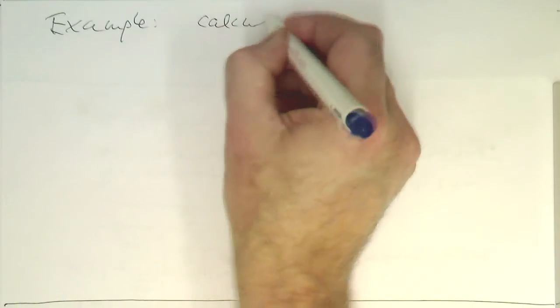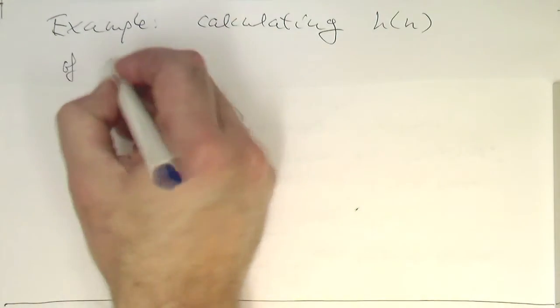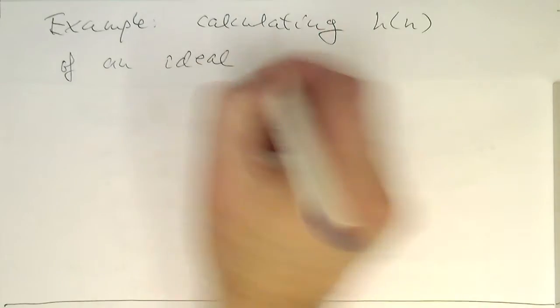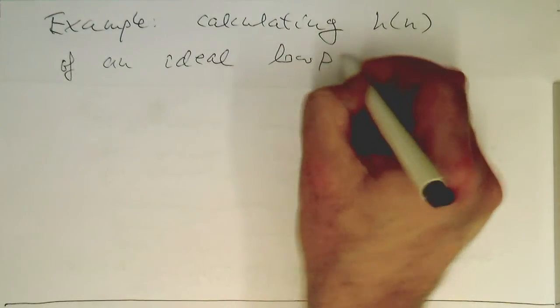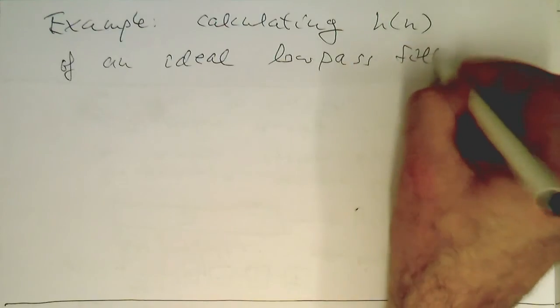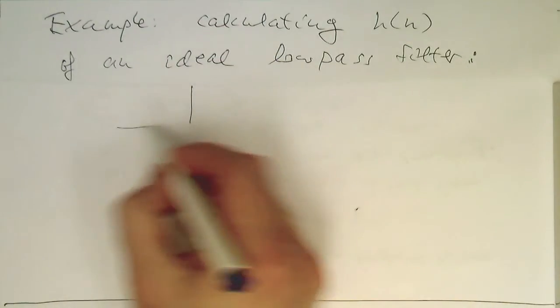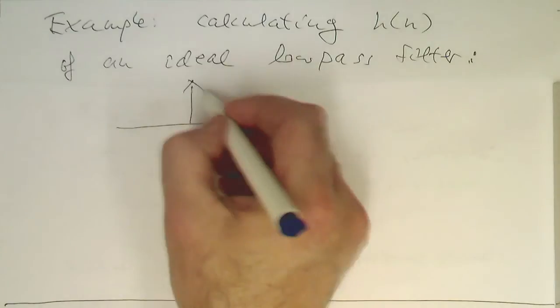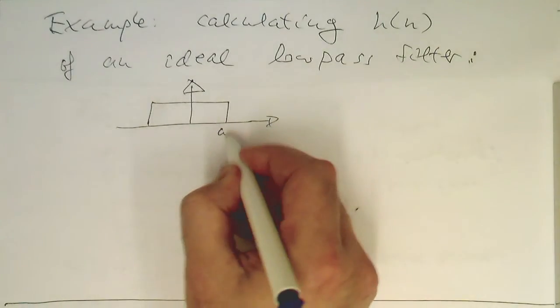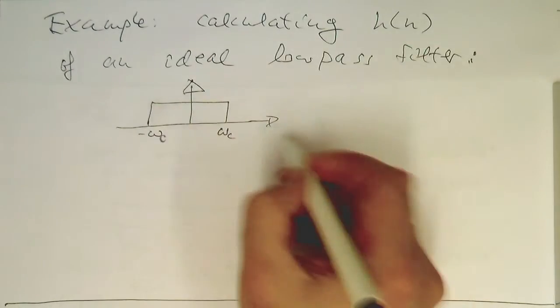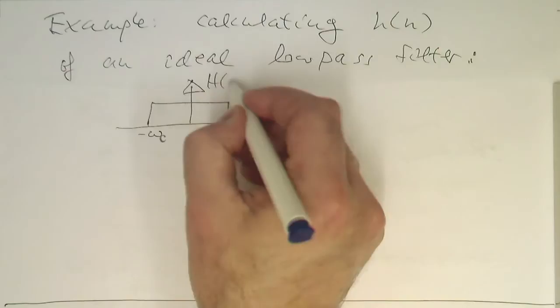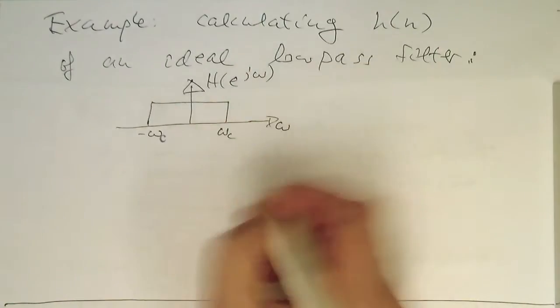We are calculating h of n of an ideal low-pass filter. Remember, our ideal low-pass filter has this brick-like response: it equals one between minus omega c and plus omega c, and zero otherwise. So that's omega c, minus omega c, this is omega, and this is H of e to the j omega — that's our frequency response.